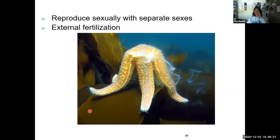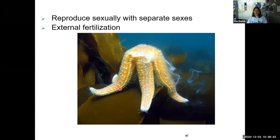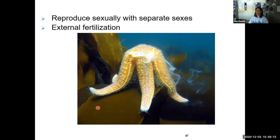Echinoderms reproduce sexually with separate sexes — male and female — and each will release their eggs and sperm into the water column, reproducing by external fertilization. They can also drop one of their arms for asexual reproduction; that arm will regenerate into a whole new organism, and the one who lost the arm will generate a new arm. The eggs produce a chemical that attracts sperm, but there's also coordination — cues like the full moon, water temperature, or changes in light penetrating the water synchronize reproduction.